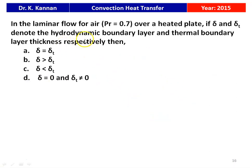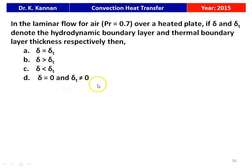Next question from the 2015 paper: in a laminar flow of air with Prandtl number = 0.7 over a heated plate, if delta and delta_T denote the hydrodynamic and thermal boundary layer thicknesses respectively, which relationship is true? For Prandtl number less than 1, delta is less than delta_T — the hydrodynamic boundary layer thickness is less than the thermal boundary layer thickness. This is the correct answer.